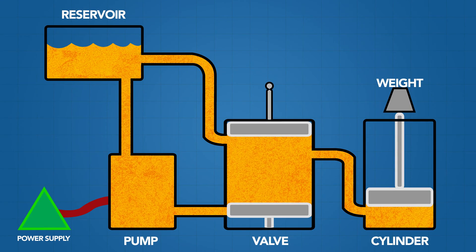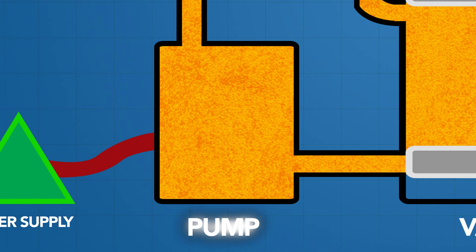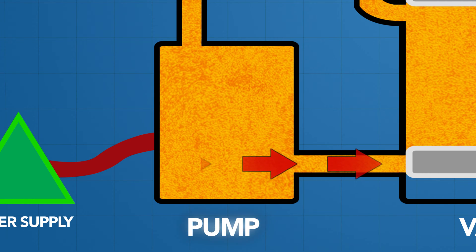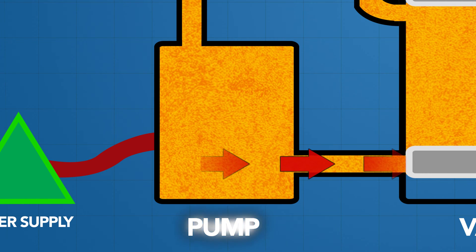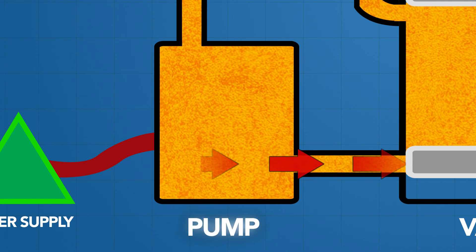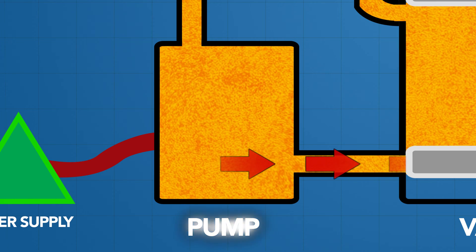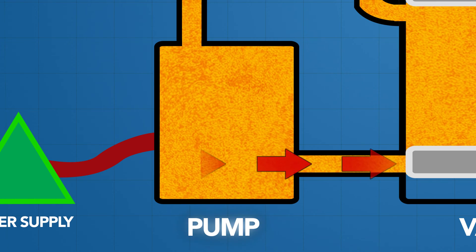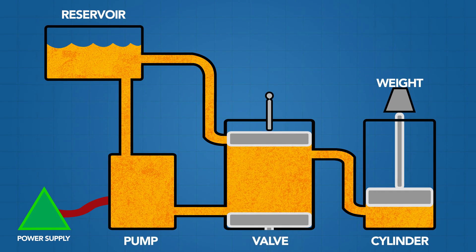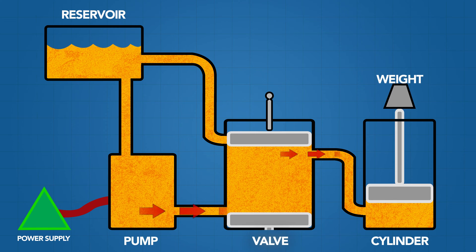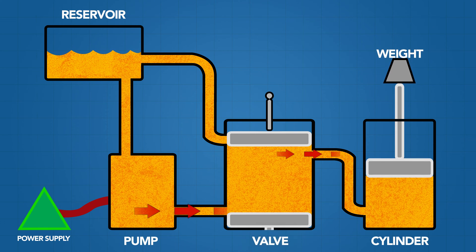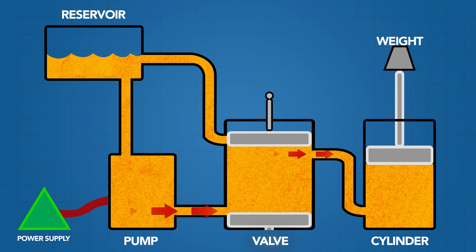Next we have the pump. This takes that hydraulic fluid from the reservoir and pressurizes it, sending it to the control valve. The control valve then controls the direction of the fluid, sending it either to the cylinder and extending it, or sending it back to the reservoir.